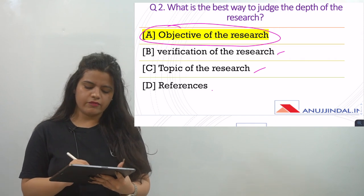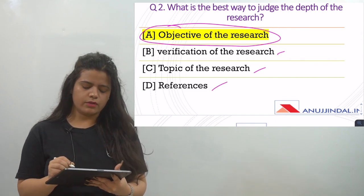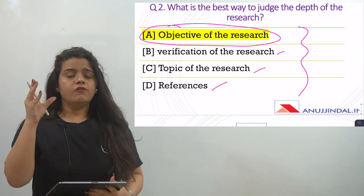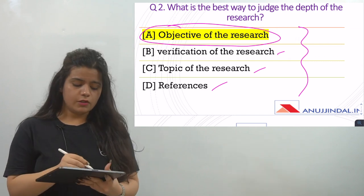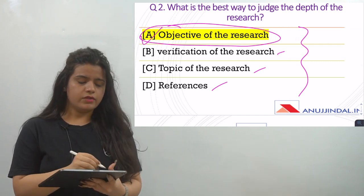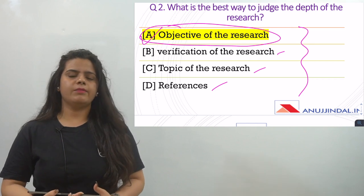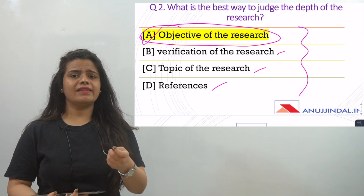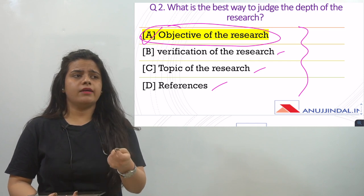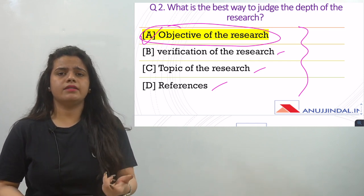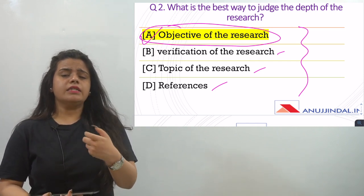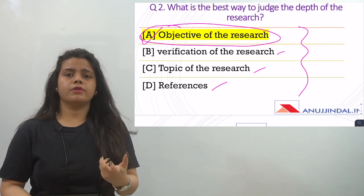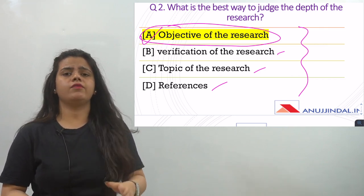Topic of the research is also important, and references are also important — these are among the four options. But to judge the depth of the research, the objective of the research is always the answer. Without the objective of the research, you cannot determine how deep the research is or whether it is important. So to assess depth, you need the objective of the research.